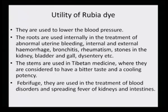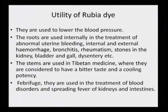Other utility of rubia dye: it is used to lower blood pressure. The roots are used internally in the treatment of abnormal uterine bleeding, internal and external hemorrhage, bronchitis, rheumatism, stones in the kidney, bladder and gall, as well as dysentery. Stems are used in Tibetan medicine, where they are considered to have bitter taste and a cooling potency, used in treatment of blood disorders and spreading fever of kidneys and intestines. These dyes are not only non-toxic but have very pronounced medicinal effects.